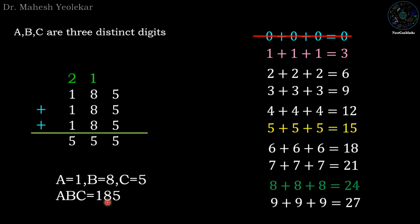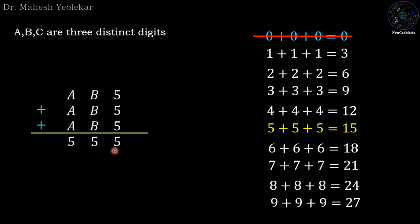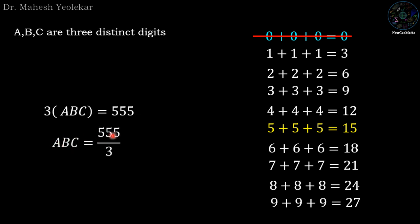We begin with the last digit is 5. We already proved AB5 plus AB5 plus AB5 equals 555. So we can say that 3 times ABC equals 555. If we take 3 to the other side, we have ABC equals 555 divided by 3, so ABC equals 185. Therefore A equals 1, B equals 8, and C equals 5.